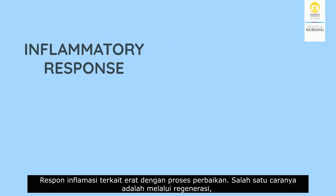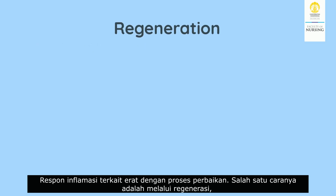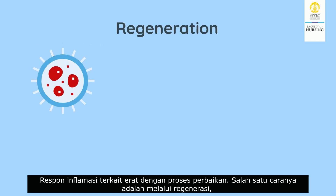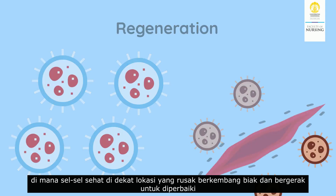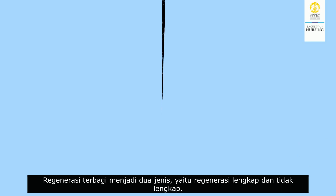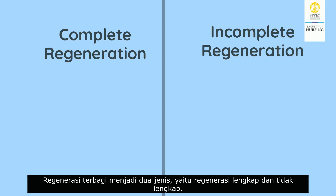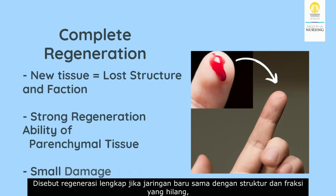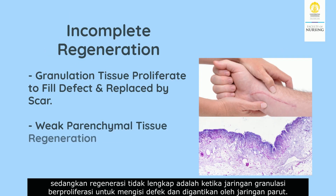Inflammatory response is closely intertwined with the process of repair. One mechanism is tissue regeneration, where healthy cells near the damaged site proliferate and migrate for repair. Regeneration is divided into two types: complete and incomplete. Complete regeneration is when the new tissue is the same as the lost structure and function, while incomplete regeneration is when granulation tissue proliferates to fill the defect and is replaced by scar tissue.